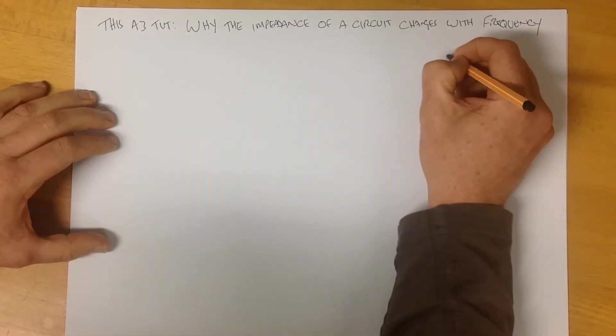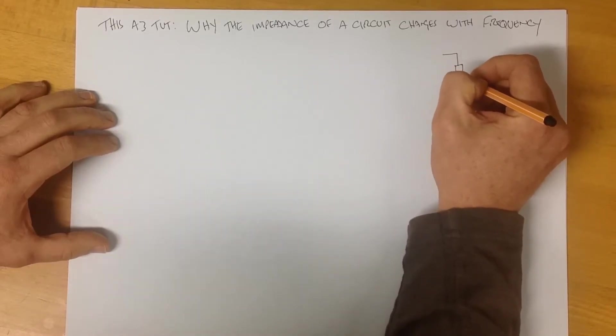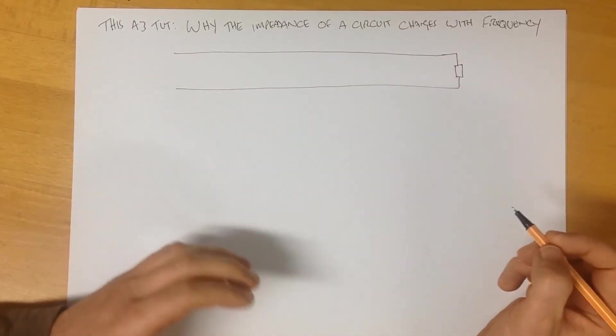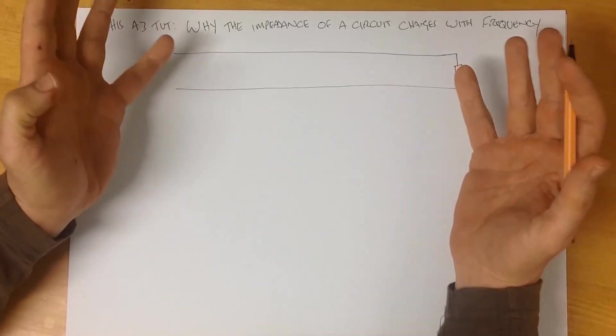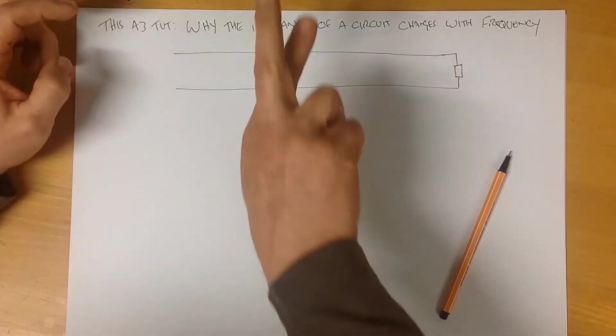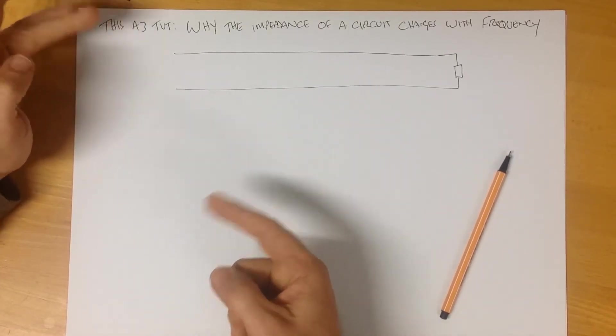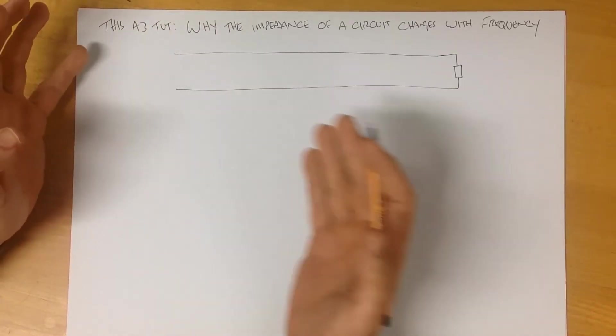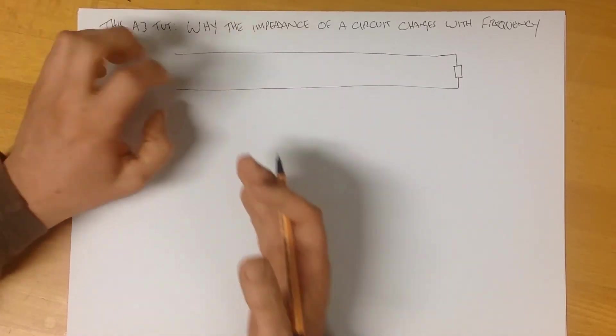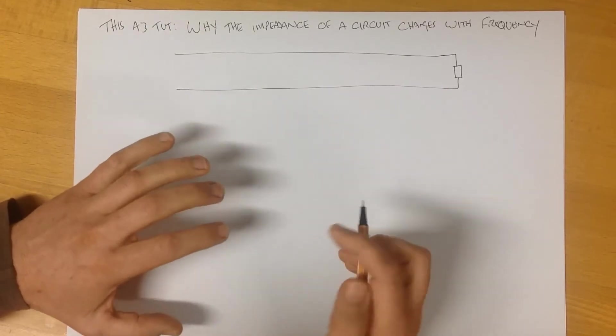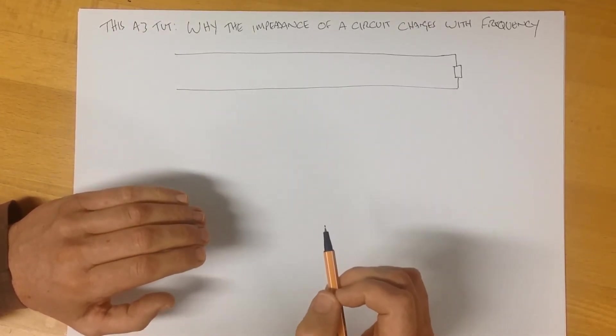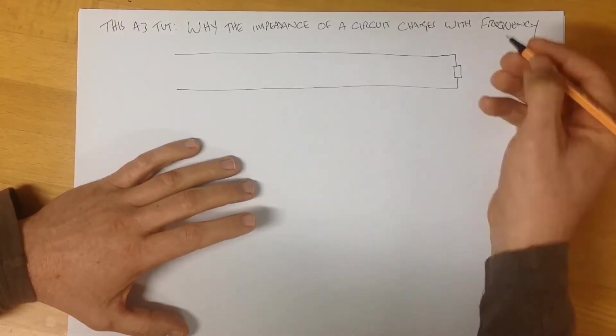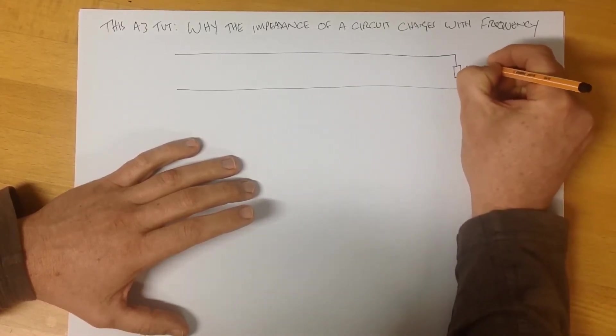And when I say transmission system, this could be telecommunications or it could be power. But we take a load, a purely resistive load down here, and we have something that resembles a transmission line, a long pair of wires. These could be a twisted pair where we have two wires that are twisted together, used for most telecommunications circuits, or it could be a power system where this could be a phase wire and this could be a neutral wire. For argument, we'll call it 600 ohms.